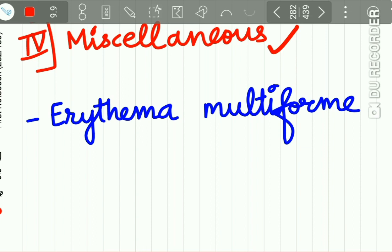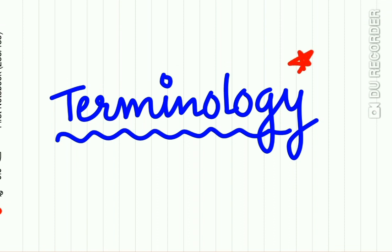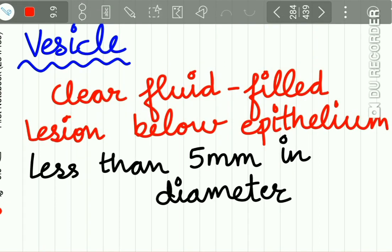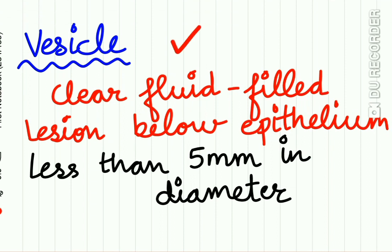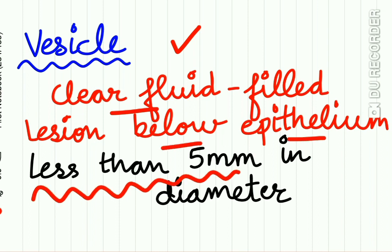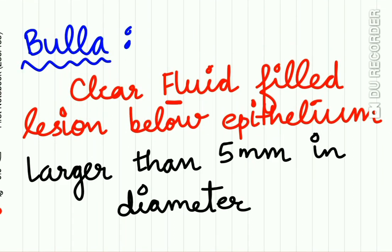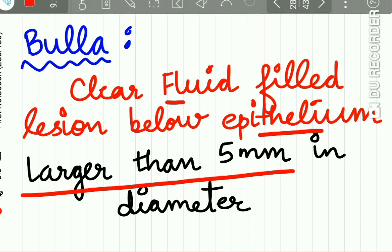I recommend you all to follow the classification accepted by your university. Now let us look at some basic terminology for skin lesions. A vesicle is a clear fluid-filled lesion, present below the epithelium, and less than 5 mm in diameter. A bulla also contains clear fluid, is present below the epithelium, and is larger than 5 mm in diameter.